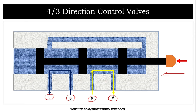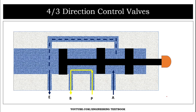After pressing the push button, the spool transfers from right to left. Port A gets connected to port P and port B gets connected to port E. The pressurized oil transfers through the connected ports to the actuator, and the exhaust oil from port B transfers to port E. When we release the push button, port A gets connected to port E and port P gets connected to port B.